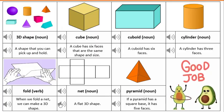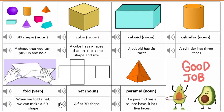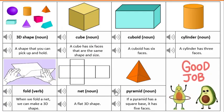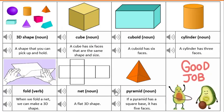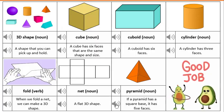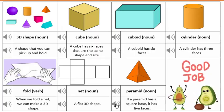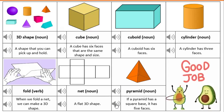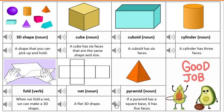A flat 3D shape is called a net. Pyramid. If a pyramid has a square base, it has five faces.